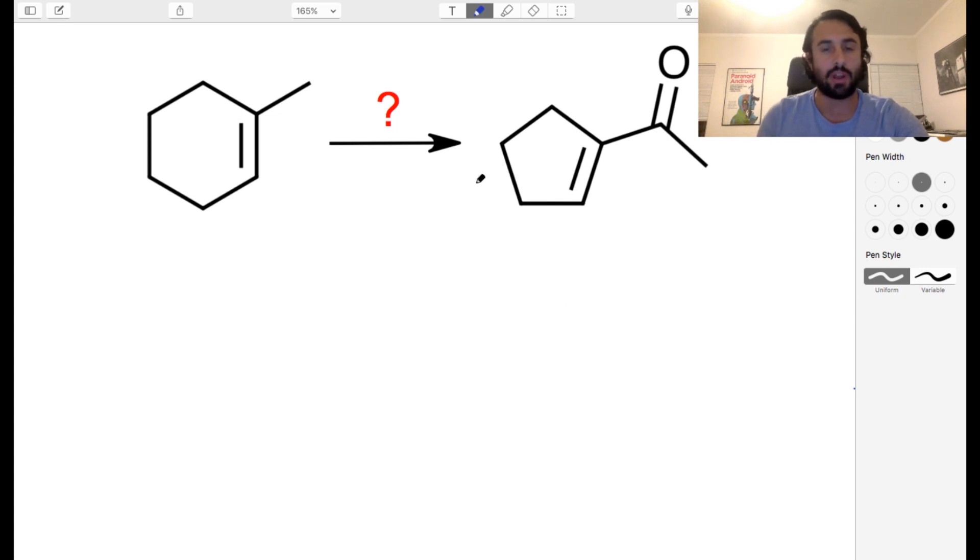So hopefully we all know ozonolysis because to me I look at this and it screams out ozonolysis because we do need to open up that six-membered ring. There's no way to just magically remove a carbon, right? So we are going to need to open up that ring.